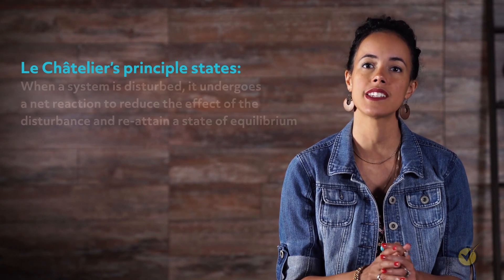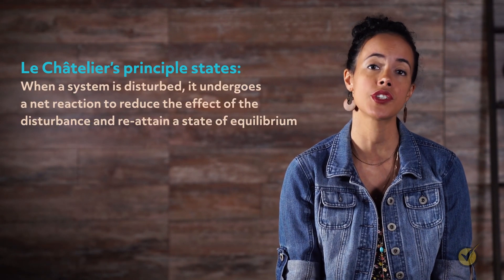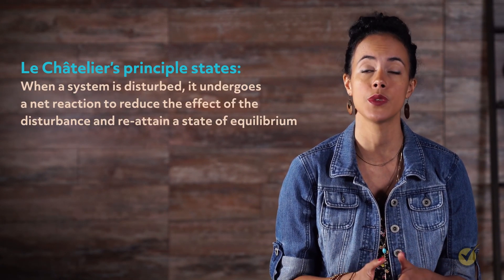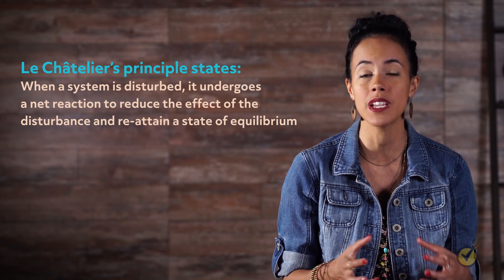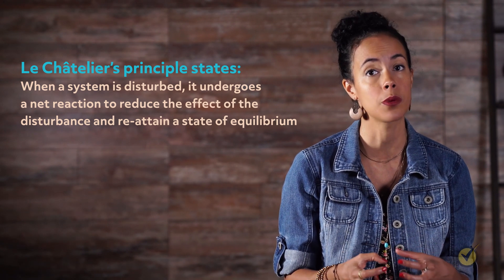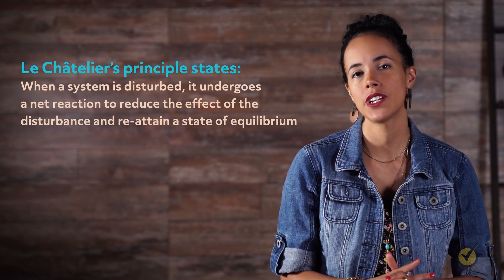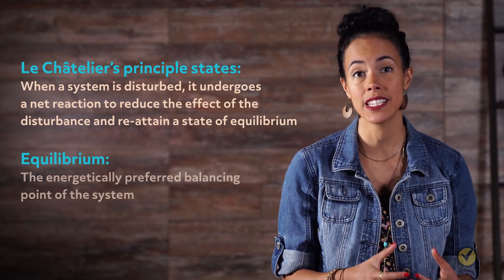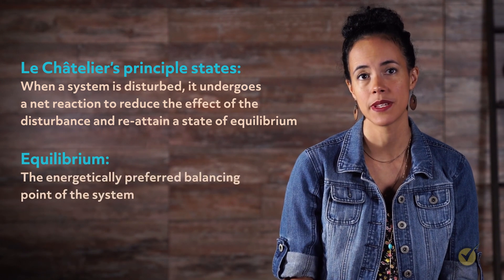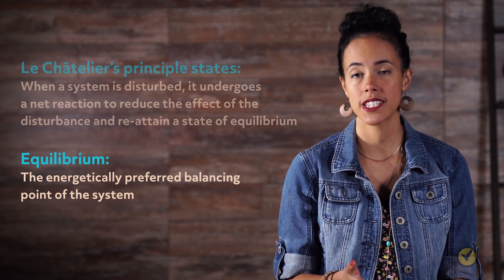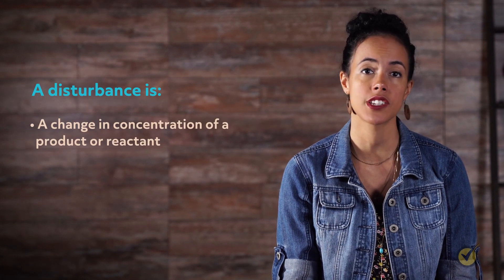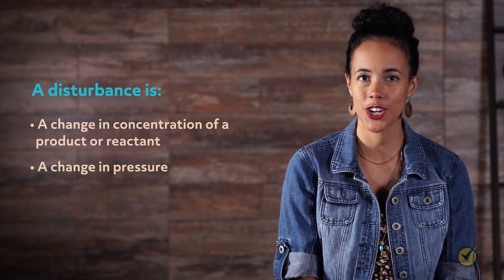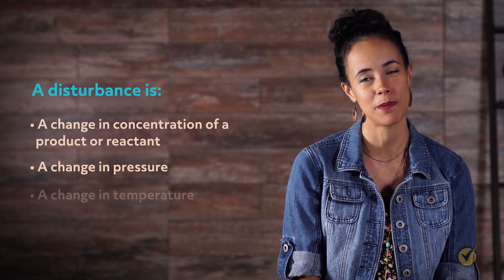Le Chatelier's Principle states that when a system is disturbed, it undergoes a net reaction to reduce the effect of the disturbance and re-attain a state of equilibrium. Hopefully that feels somewhat intuitive, as we know equilibrium is the energetically preferred balancing point of the system. In this context, a disturbance is a change in concentration of a product or reactant, a change in pressure, or a change in temperature.